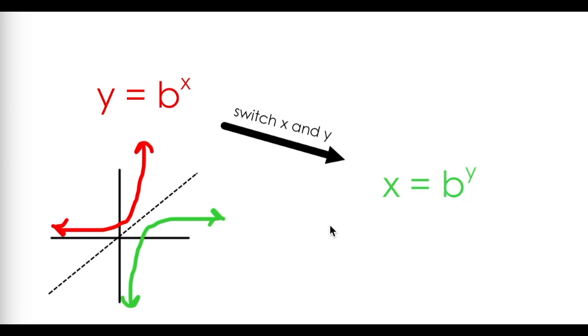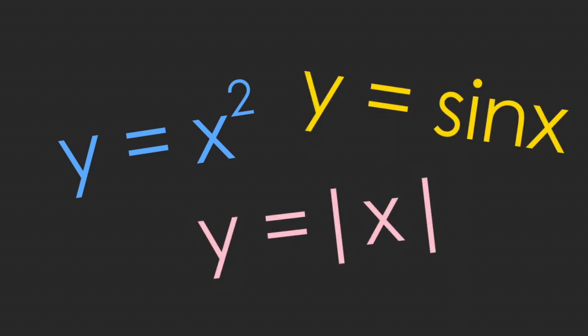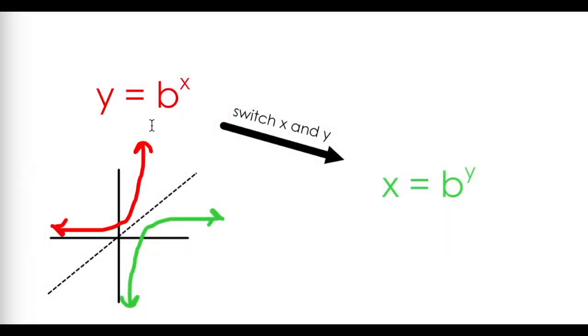Now as I mentioned, with inverse functions, we like to solve for y, because we're accustomed to writing functions in that way. Think about y equals x squared, y equals sine of x, y equals the absolute value of x. So we've missed a crucial step in finding the inverse of this exponential function, which is solving for y.